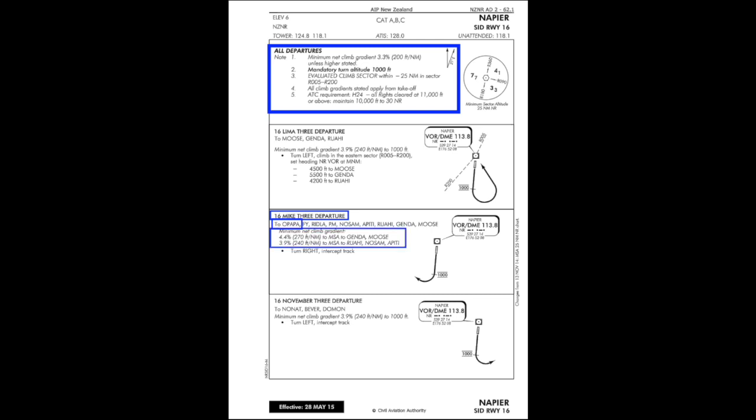For this departure I've decided that we want to go to OPAPA, so I've picked the only departure that goes to OPAPA from runway 16, and that is the 16 MIC 3 departure. Going through and briefing the specific departure: minimum climb gradient is 4.4% to MSA — Minimum Safe Altitude — to Jenda or Moose, or 3.9% to MSA to Ruihi, Nosam, or Apati. We're not going to any of those places, so that 3.3% from the all departures section still applies to us. The last instruction is turn right, intercept track, and we get a little diagram showing us what we're doing.